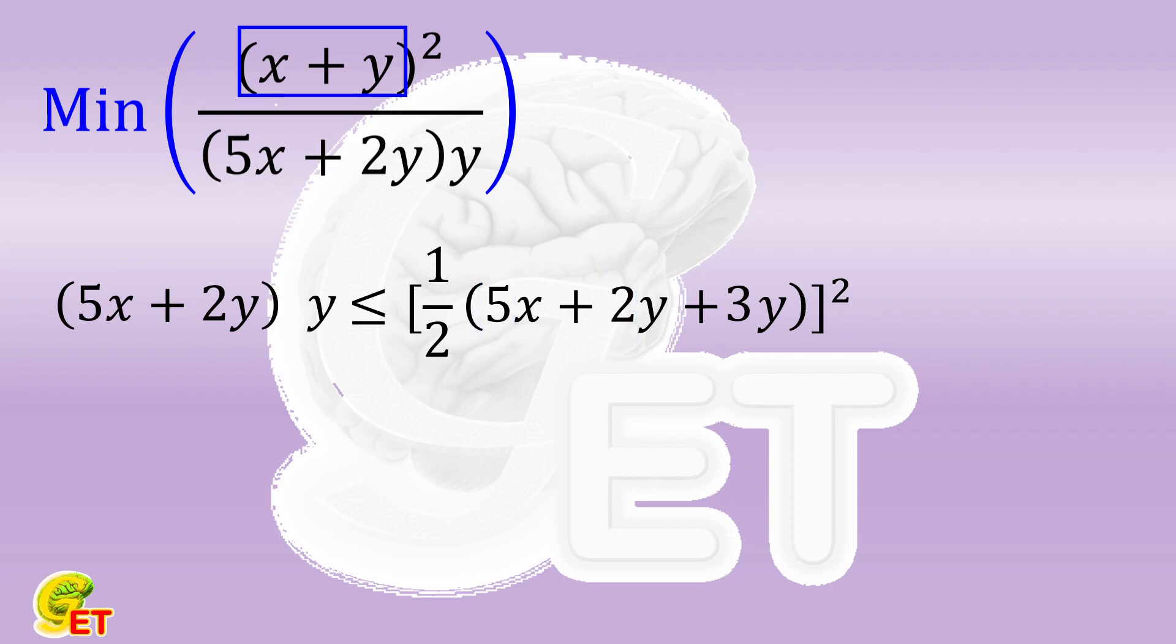Of course, on the left side of the inequality we also need 3y instead of a single y. But after all, we only need (5x + 2y)y rather than 3y. So we have to divide it by 3. And of course, the right side of the inequality also has to be divided by 3.